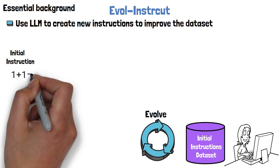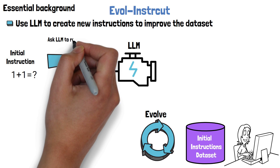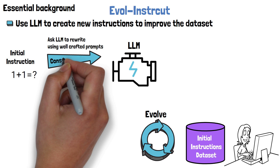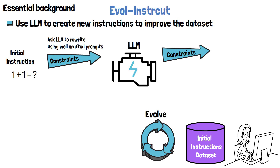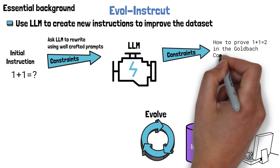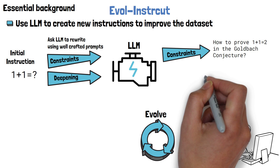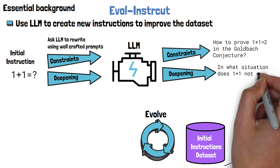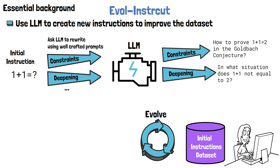We take a simple initial instruction and provide it to an LLM, asking it to rewrite the instruction using well-crafted prompts. For example, one type of prompt adds constraints to the original instruction, and the LLM outputs a new instruction matching that requirement — as we can see in the example, where a constraint has been added. Adding constraints is one example of instruction evolution. Another example is deepening, where the model yields a matching new instruction. Both adding constraints and deepening — plus a few more not shown here — are called in-depth evolving, because they remain within the idea of the original instruction.